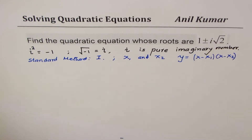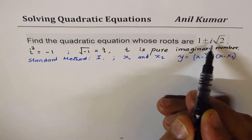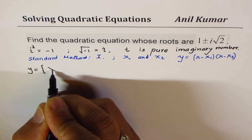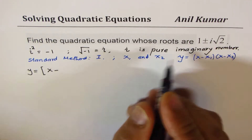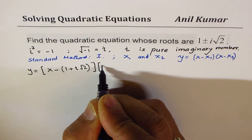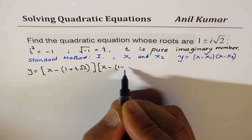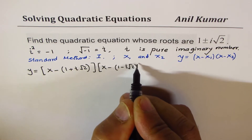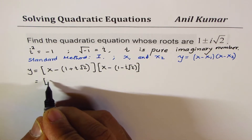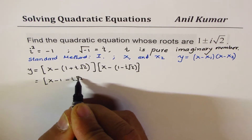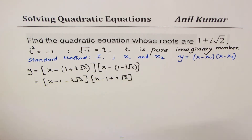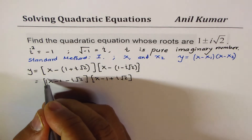Since the roots are given as 1 ± i√2, we have two roots. So we write y = [x − (1 + i√2)] × [x − (1 − i√2)]. Opening the brackets, we get (x − 1 − i√2)(x − 1 + i√2).